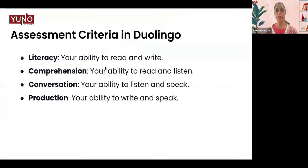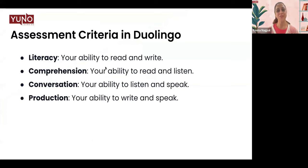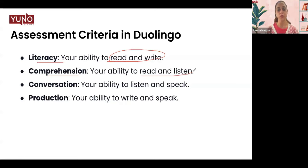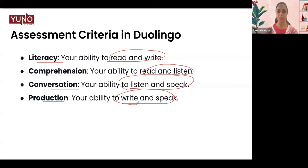The first and most important thing to remember is that your Duolingo exam is an integrated paper. This means you will be judged for more than one skill at a time. There are four scores: Literacy stands for your ability to read and write, Comprehension for reading and listening, Conversation for listening and speaking, and Production for writing and speaking. This is what makes it an integrated paper.